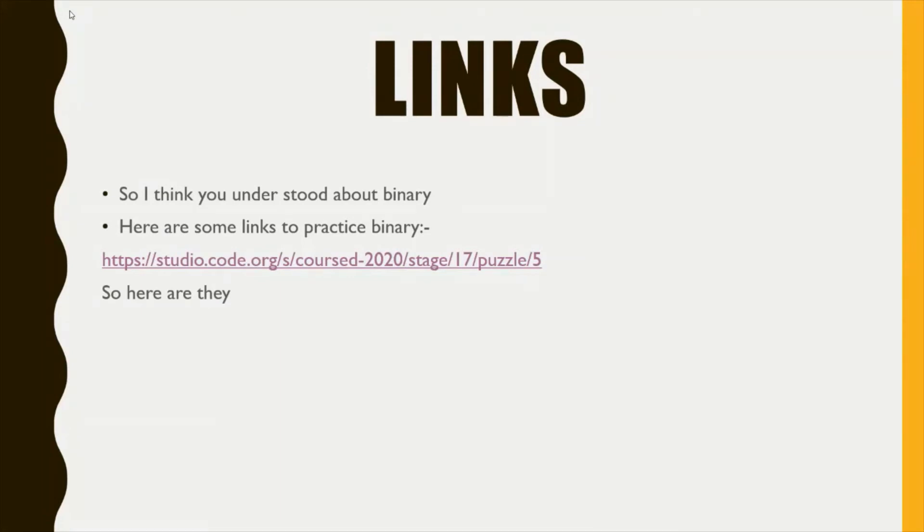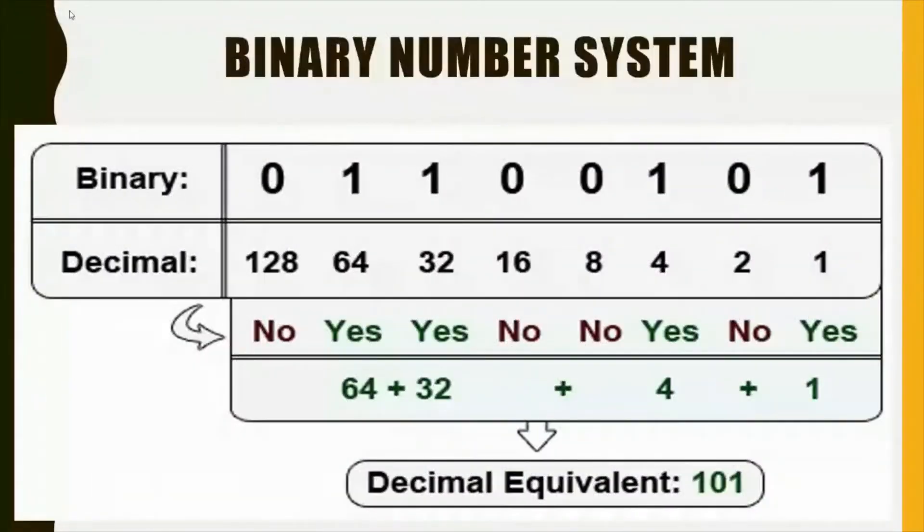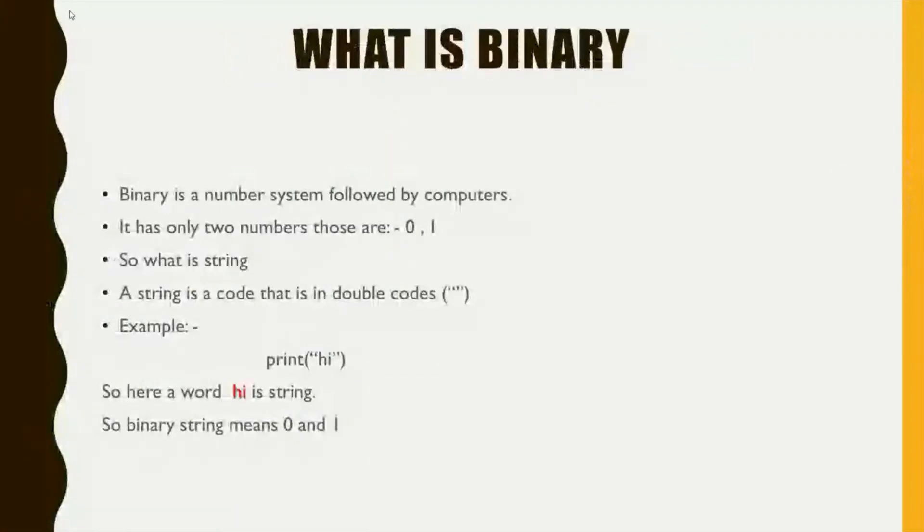So let me repeat what is binary. This is a binary system. What is binary? Binary system followed by computers. It has only two numbers and those are zero and one. And string means a string that is in double quotes is called string. Any word that is in double quotes is called string. Like if I write print any name, not only hi, any name is in double quotes, that is a string. So zero and one also, if it is in the double quotes, that is also a string, binary string.